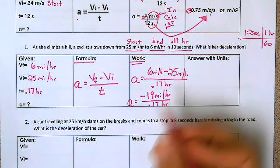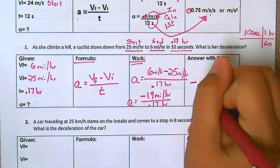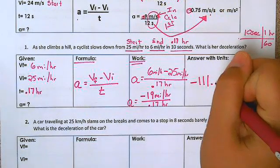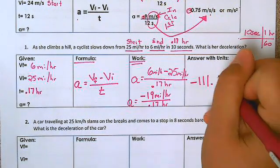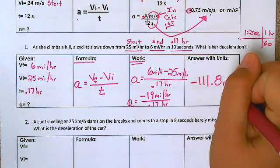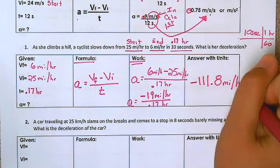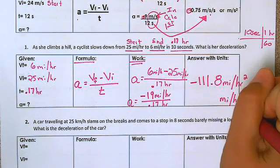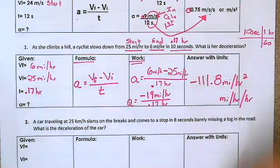And you should get negative 111.76. And we'll go ahead and just round that up to 111.8. And this is miles per hour squared, or you can write it miles per hour per hour, whichever way you like.